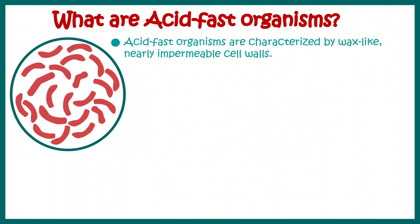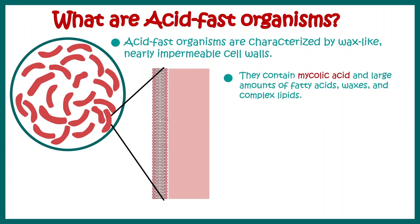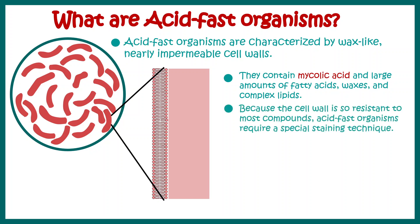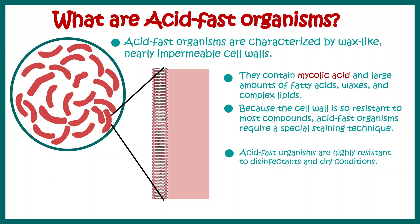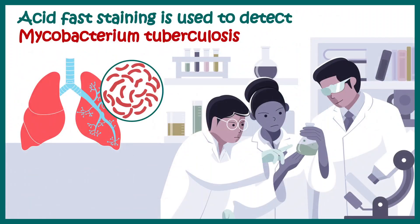Acid-fast organisms are characterized by the presence of a wax-like, nearly impermeable cell wall. They have very high levels of mycolic acid, large amounts of fatty acids, waxes, and complex lipids, which make their cell wall literally impermeable to all substances. Their cell wall is so resistant that they don't take up any other stains such as gram stain. Acid-fast organisms are highly resistant to disinfectants or dry conditions, and we need acid-fast staining to identify Mycobacterium tuberculosis, which makes this really important from a clinical perspective as well.